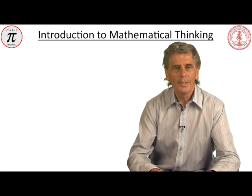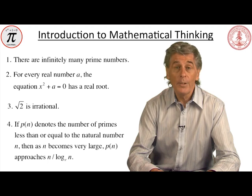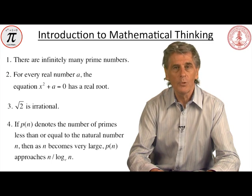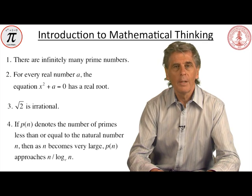Here are some mathematical statements. There are infinitely many prime numbers. For every real number a, the equation x squared plus a equals zero has a real root. The square root of two is irrational. If p(n) denotes the number of primes less than or equal to the natural number n, then as n becomes very large, p(n) approaches n divided by log n.